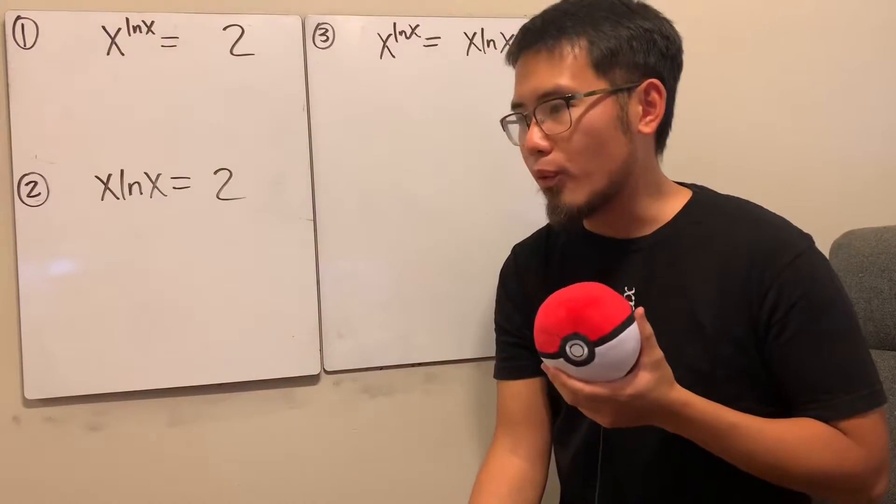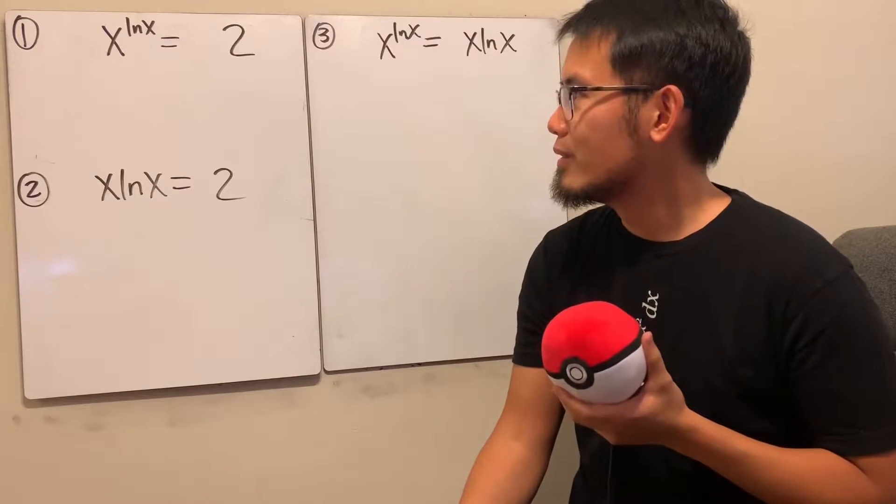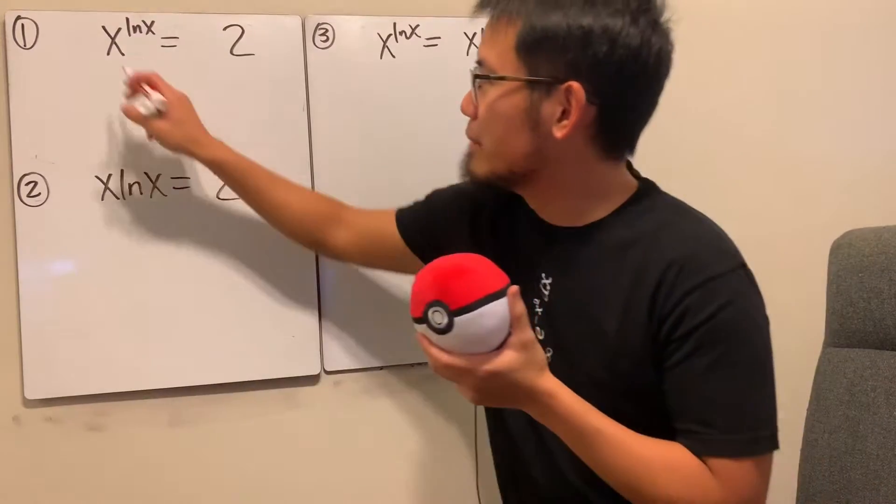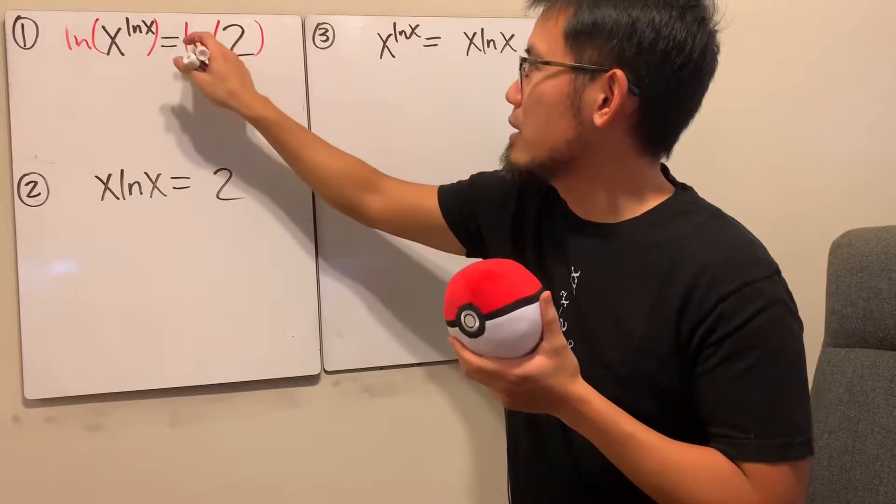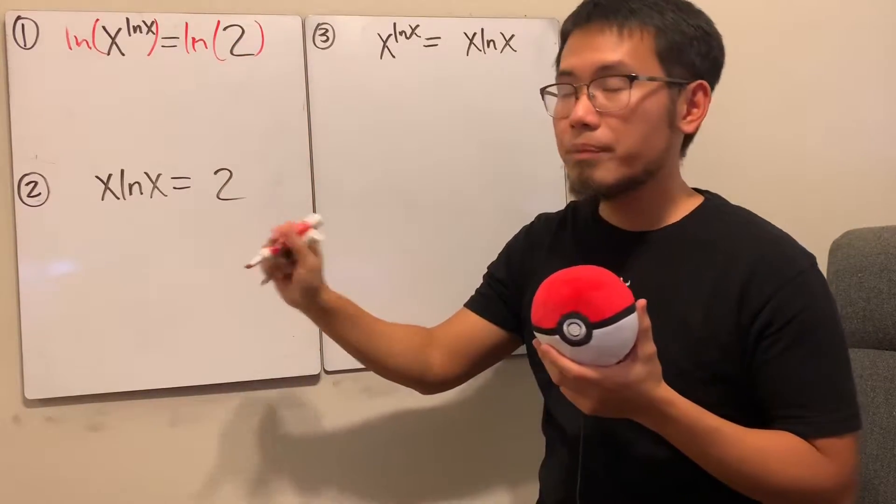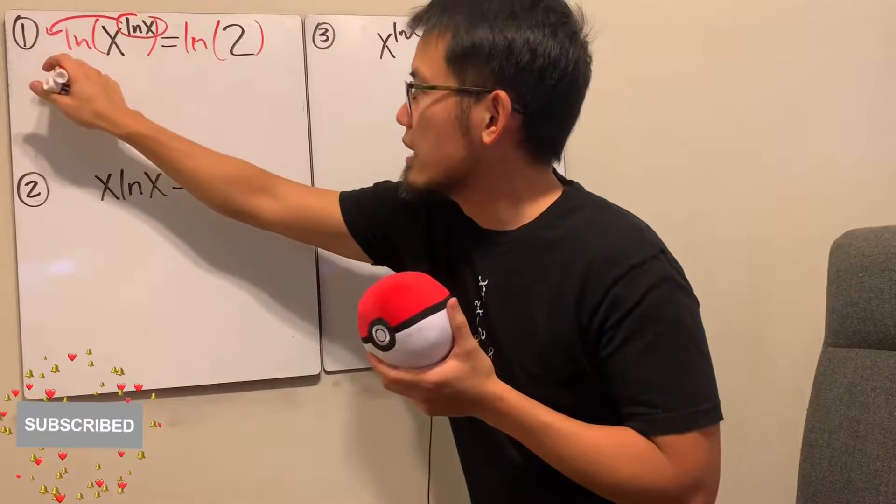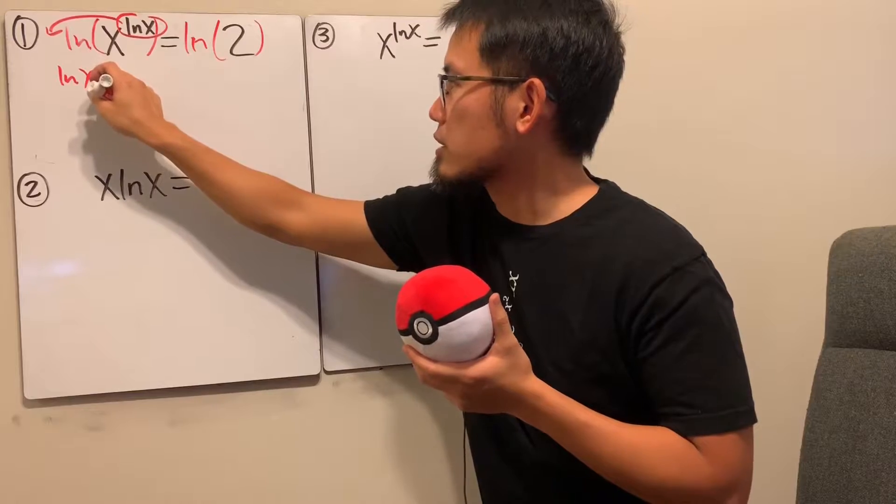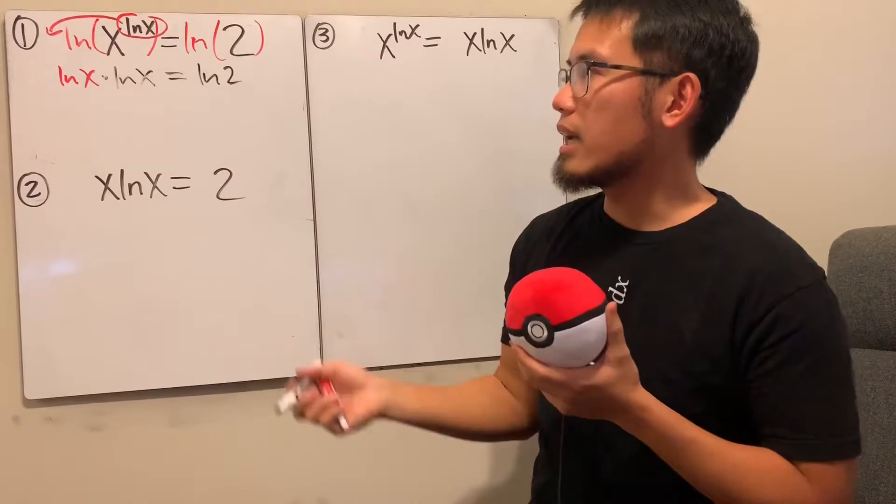First, x to the natural log of x power that's equal to 2. What shall we do? Well, the deal is that I'm just going to take the natural log on both sides, even though it has the natural log already. But if we take the natural log, you will see we can put the power to the front, so we get natural log of x. And then the base right here is still natural log, so we multiply by another natural log. And then this right here is natural log of 2, like that.